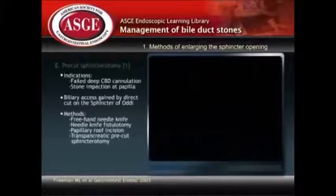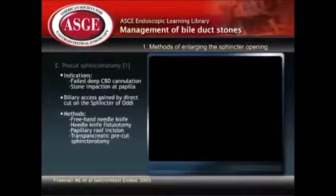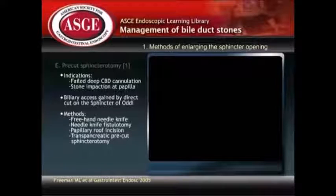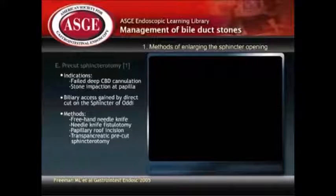Pre-cut sphincterotomy. The indications of pre-cut sphincterotomy include failure of deep CBD cannulation and stone impaction at the papilla. It aims to achieve deep cannulation and gain biliary access by direct cutting onto the papilla and sphincter orifice.